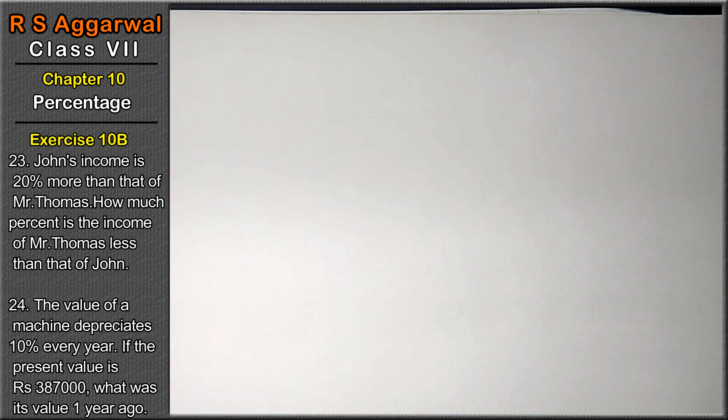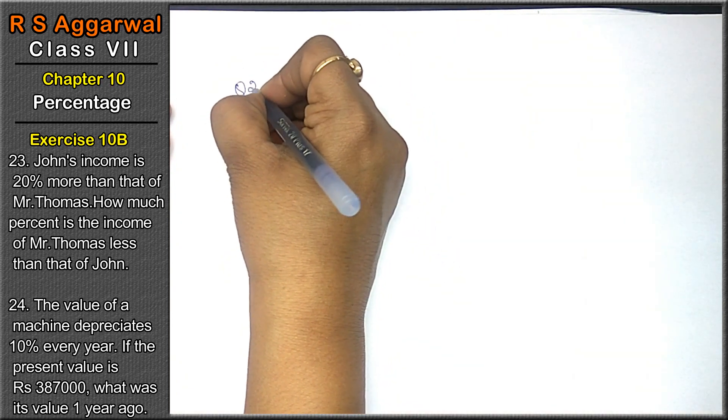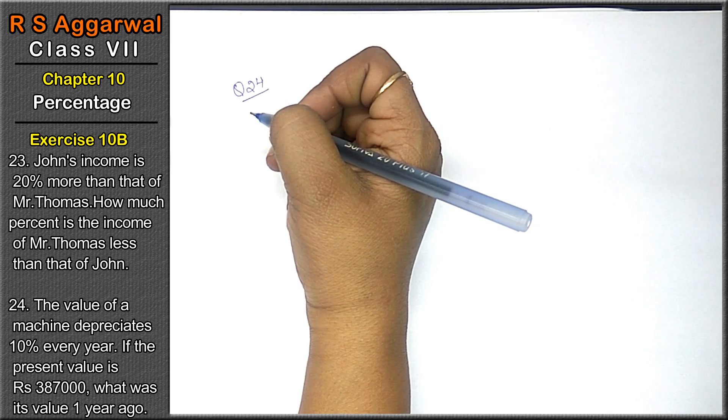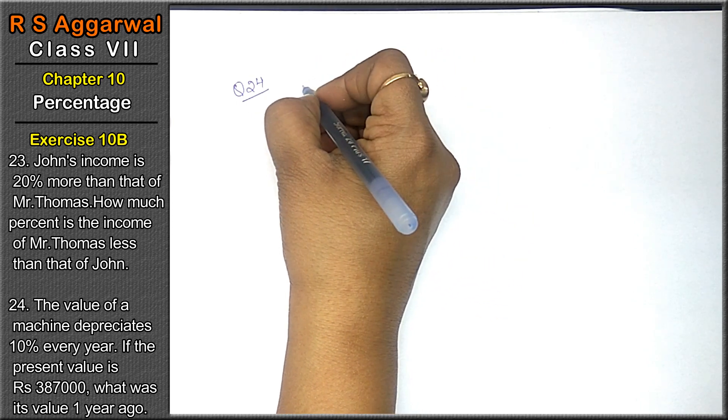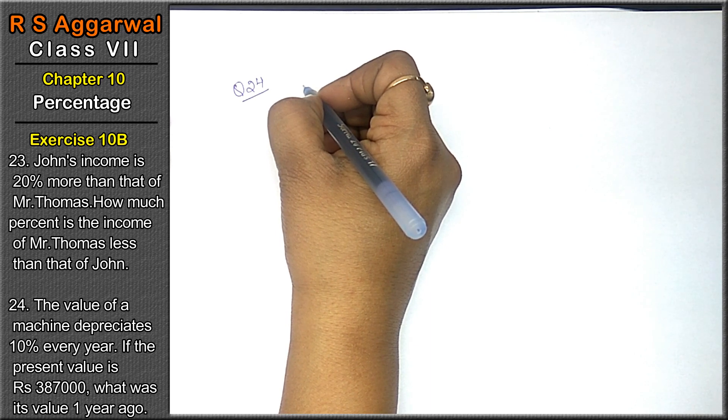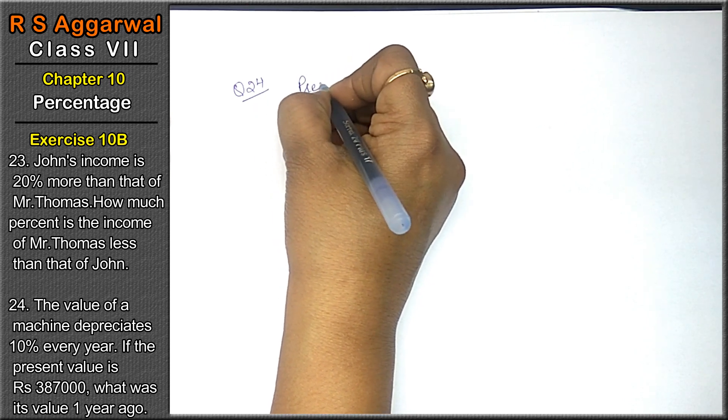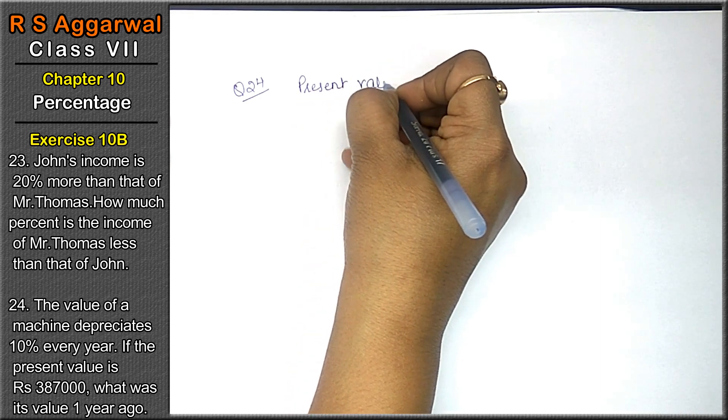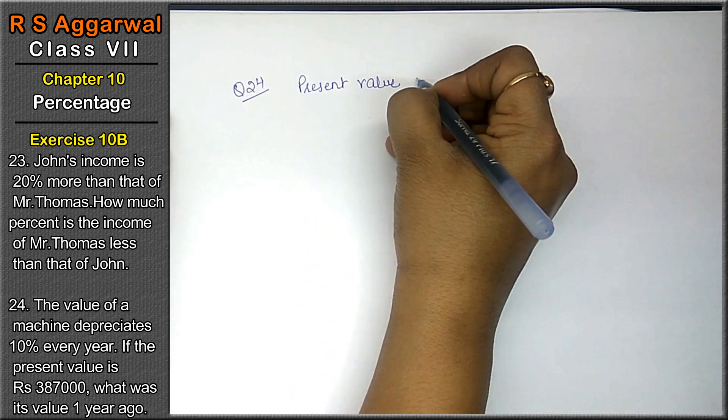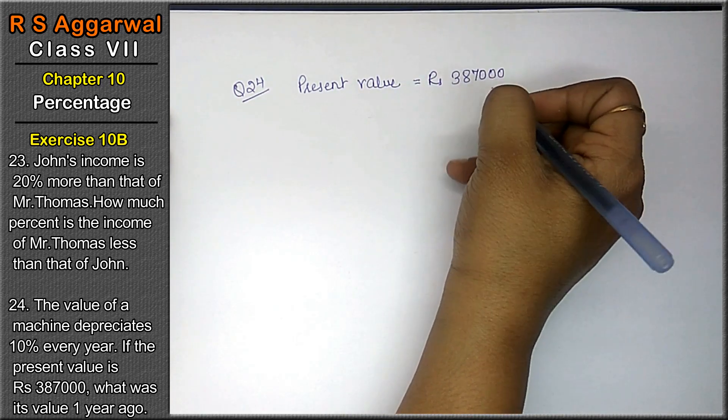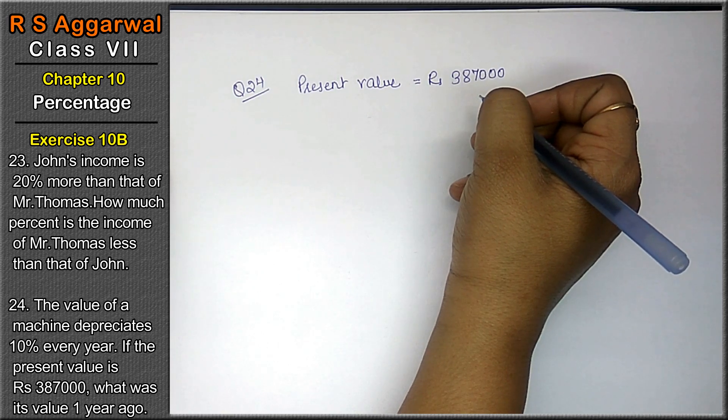Let's do question number 24. The value of a machine depreciates 10% every year. Friends, depreciation means decrease. Machine ki value 10% every year decrease ho rahi hai. If its present value is Rs. 387,000, what was its value one year ago?